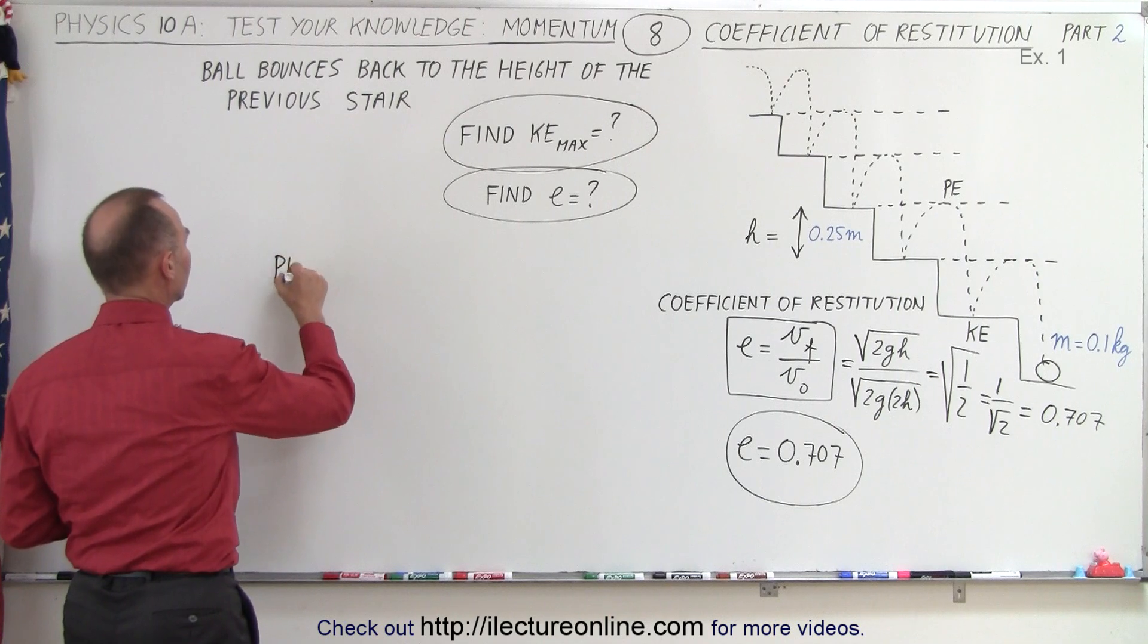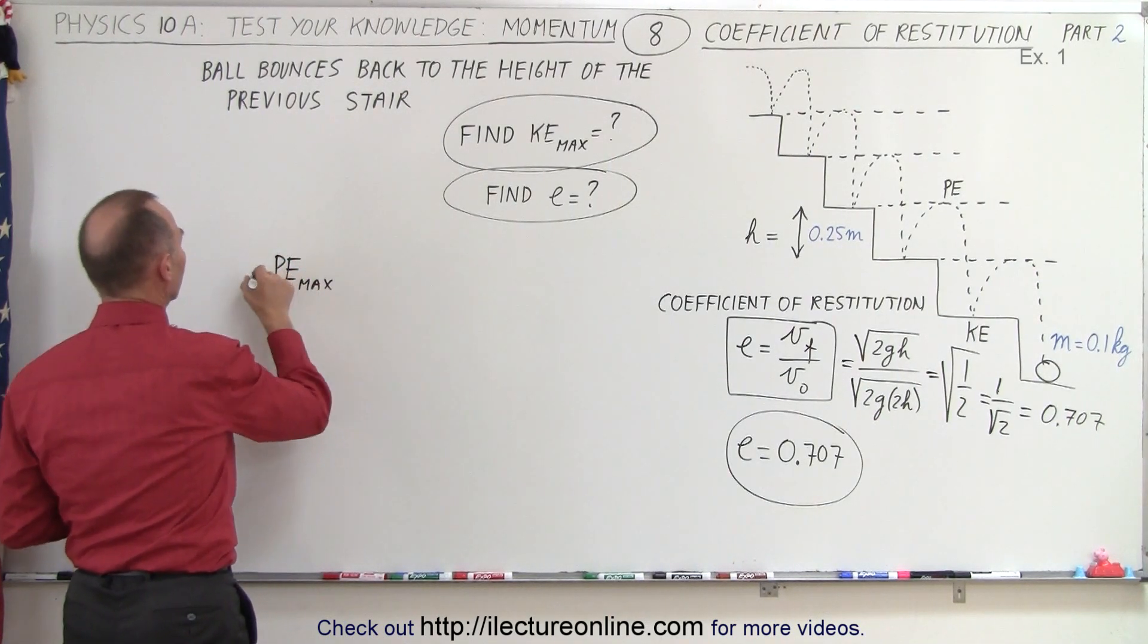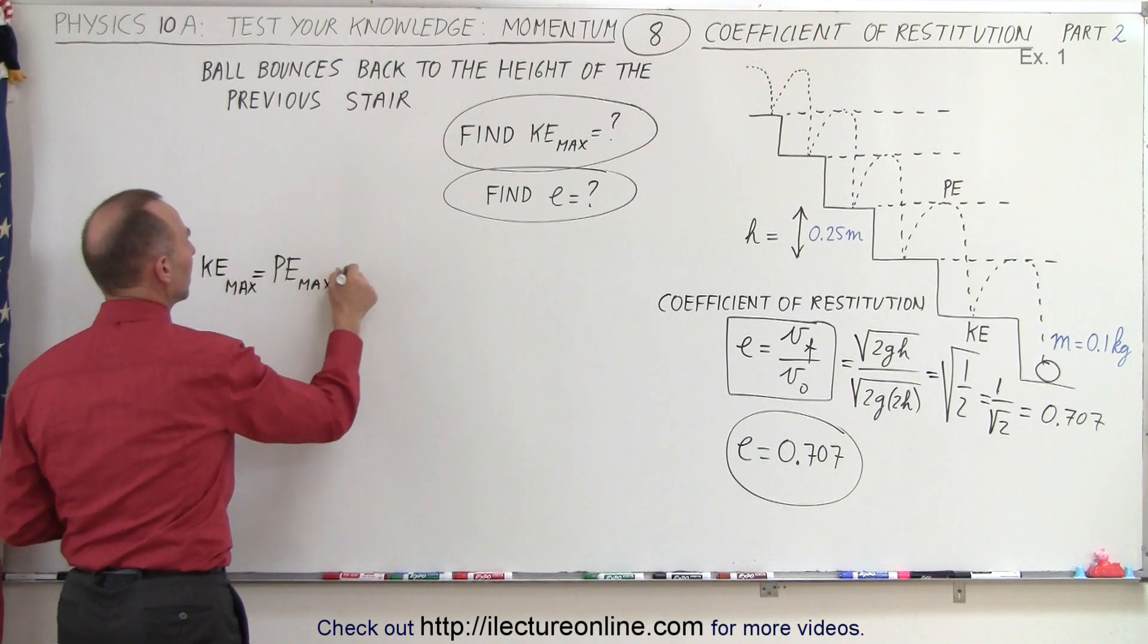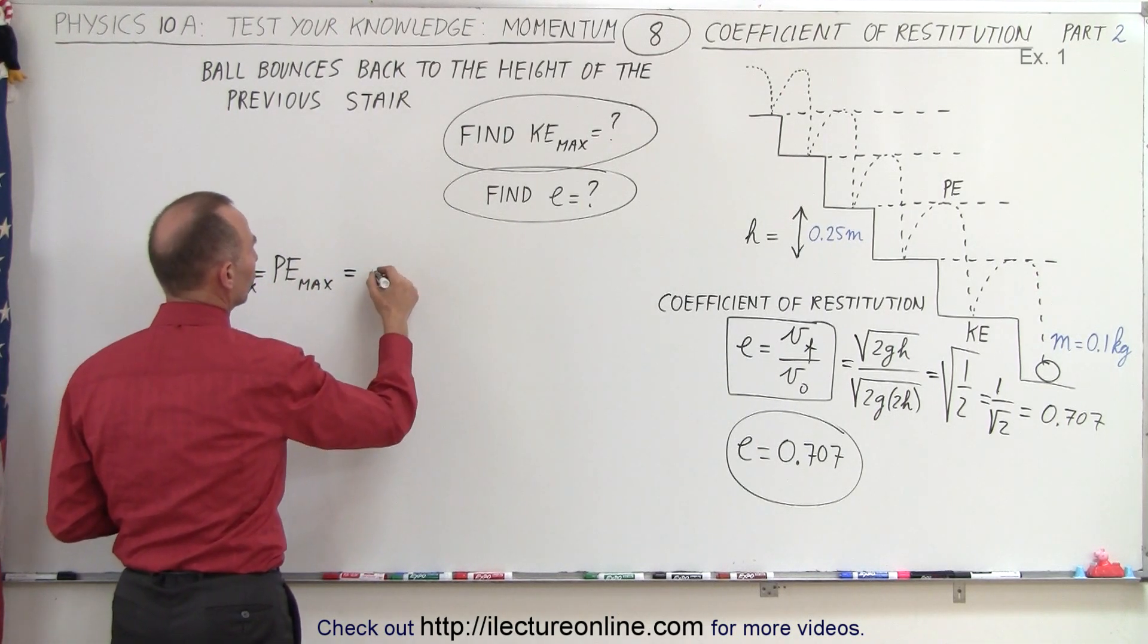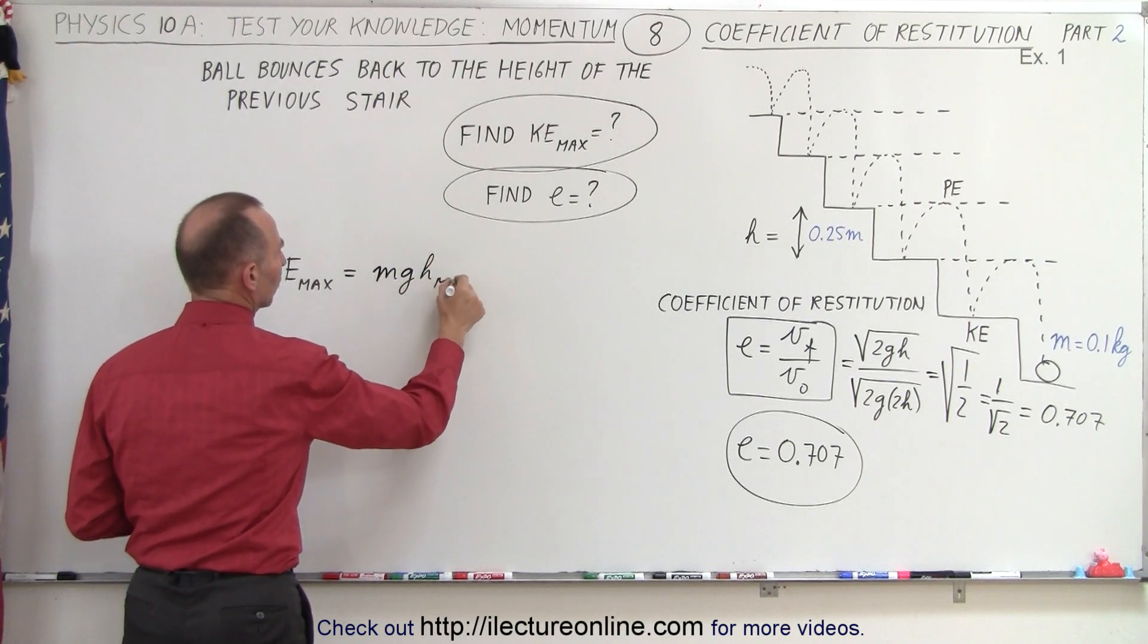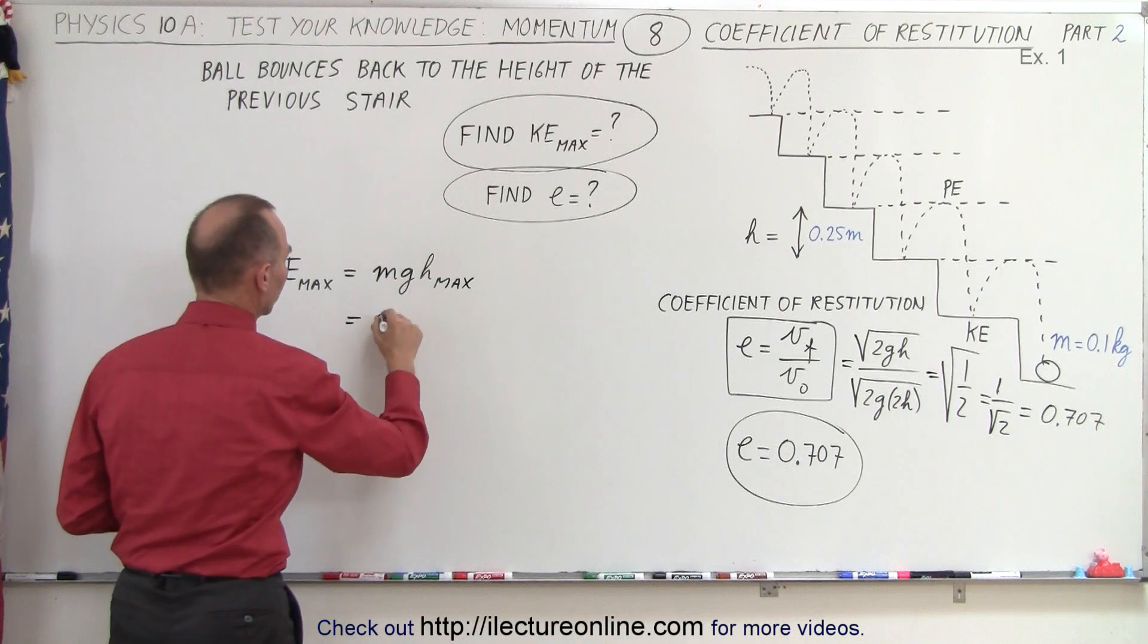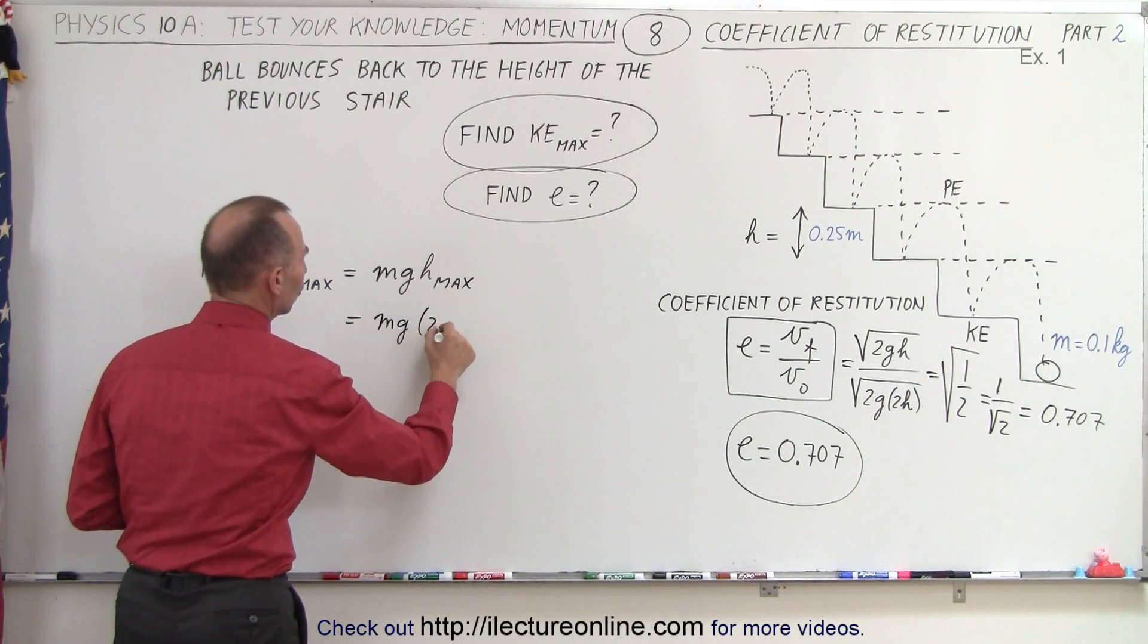So, potential energy max, which is equal to the kinetic energy max, would be equal to mg times h max. In this case, h max would be twice the height of each stair, so it would be mg times 2h.